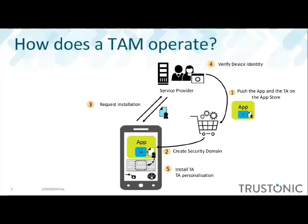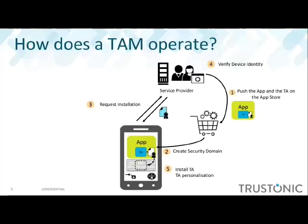The application reaches out to the service provider running the TAM, which will then potentially validate the device, perhaps establish a counter to track how many trusted applications have been deployed for billing purposes, and then authorize the installation. In step five, the trusted application is installed and stored in secure storage. At that point, the TAM may also send personalization data down to the app. Essentially, the TAM is there to be the gatekeeper for access to the TEE domain — and that was really all I wanted to present.